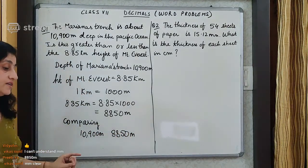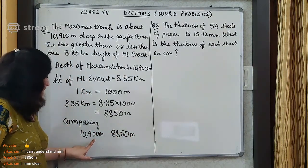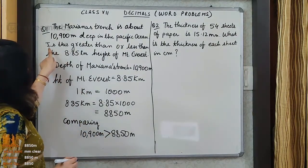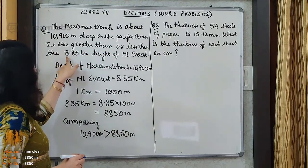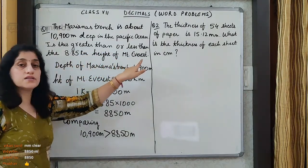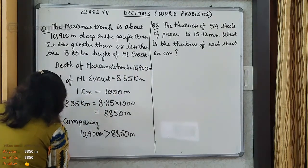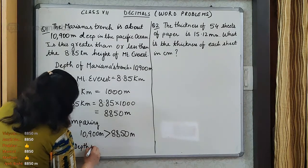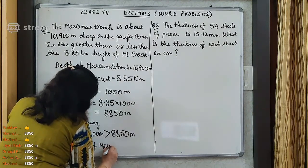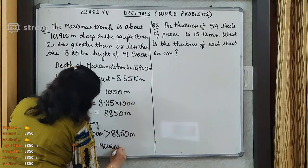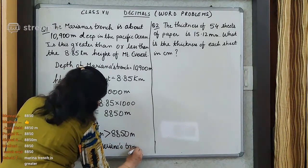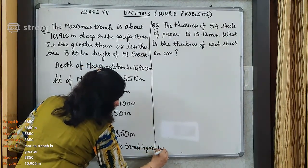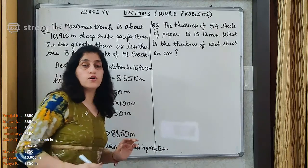Now both are in meter. So which one is greater, children? This one is greater. So we write here 'greater', and in this question which is asked, is this greater than or less than the 8.85 kilometer height of Mount Everest? So we can write the answer now that the depth of Mariana's Trench is greater.